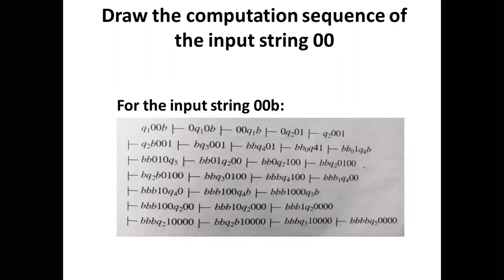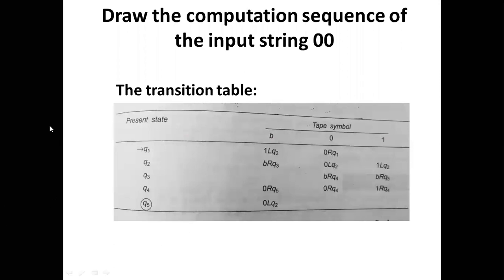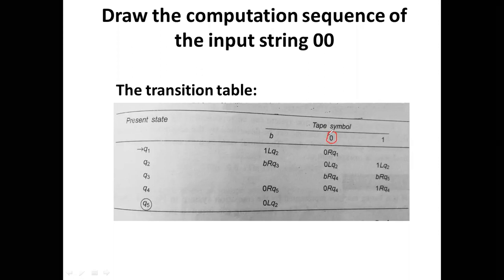Now for the input string '00': q1 is the starting state, so the initial ID is q1 00 blank. In state q1 reading zero, zero is replaced by zero, the read-write head moves to the right side, and it moves to the q1 state.